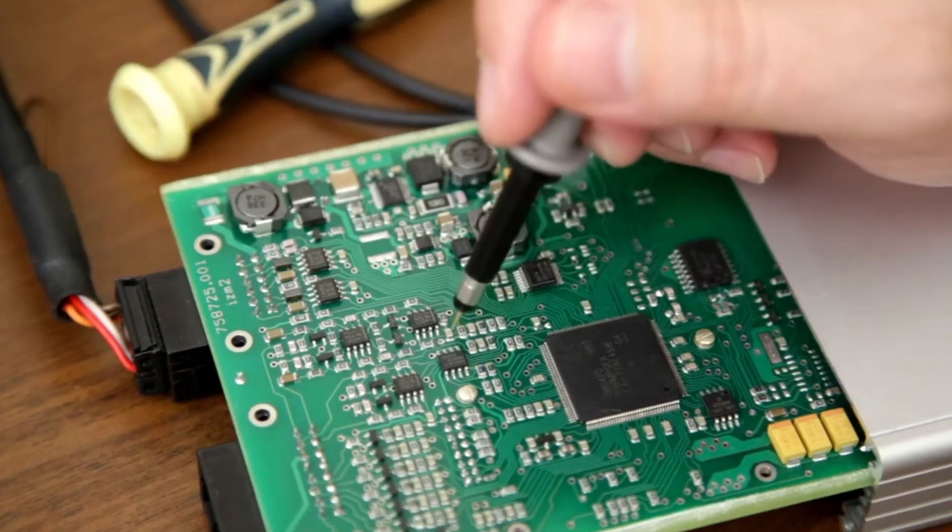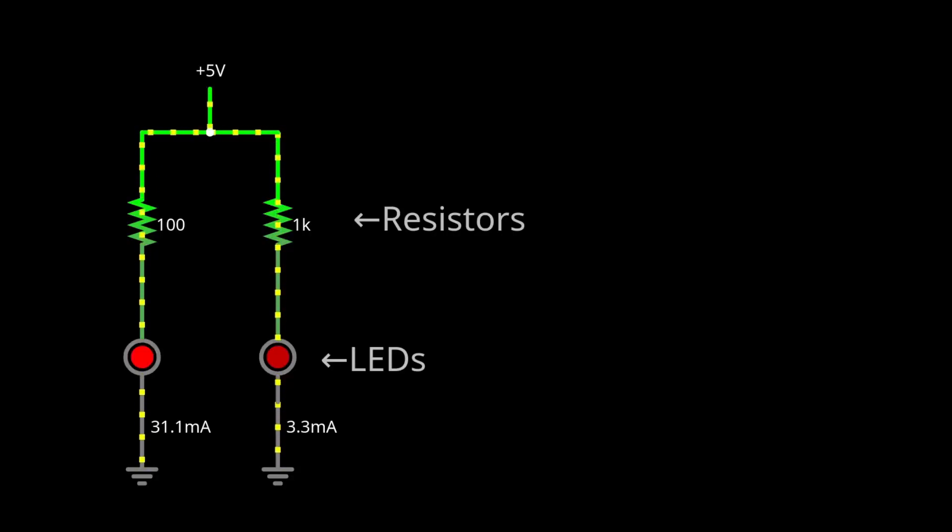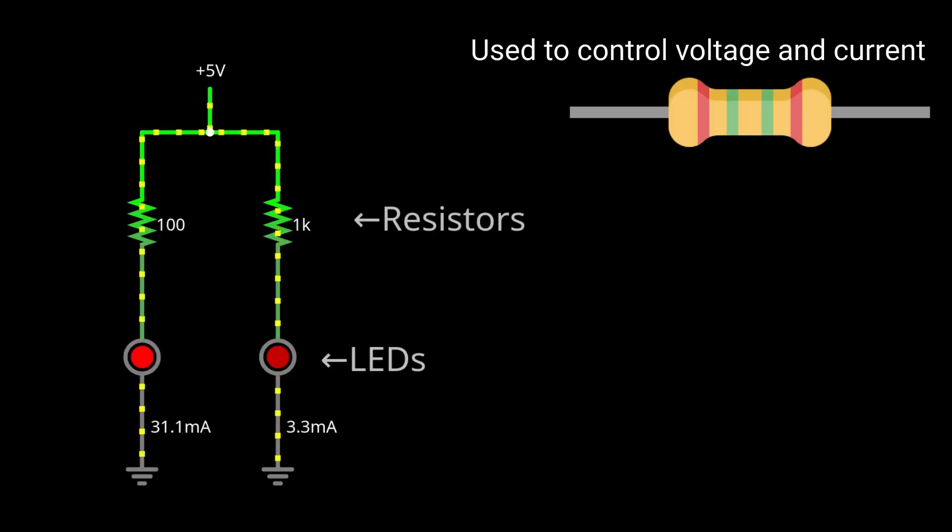Resistors. They are perhaps the most popular electronics components. Resistors limit or regulate the flow of current in a circuit. They can also be used to provide a specific voltage for a device or another component.